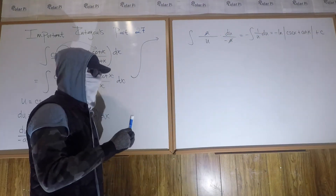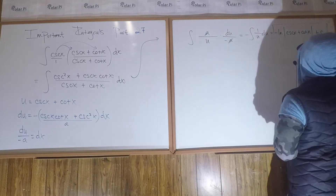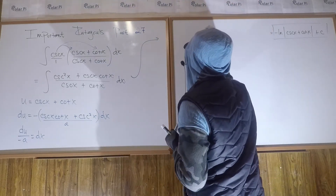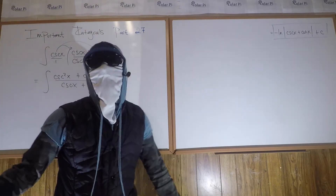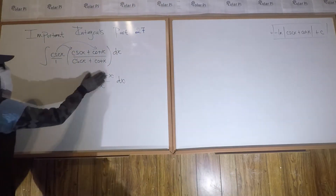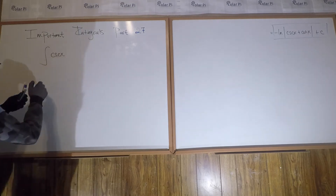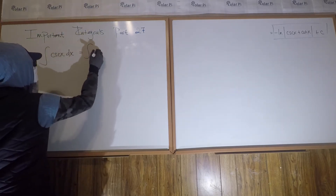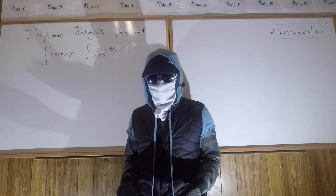So our final answer is negative ln|cosec x + cot x| + C. I'm going to erase everything but the original integral and this final answer, because I said I'm going to show you how to do this a different way, and we want to check that the second method leads to the same answer. It's a very different approach to getting to the same place. Remember, cosec x is a reciprocal of sine, so from the onset we can write the integral as 1 over sin x dx.